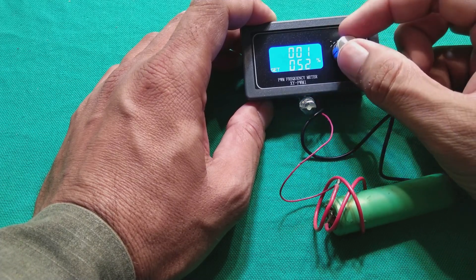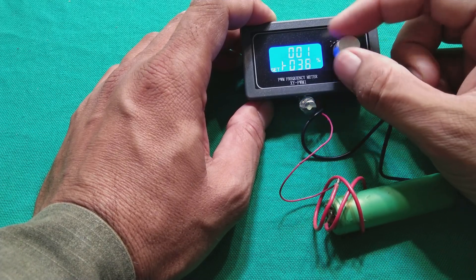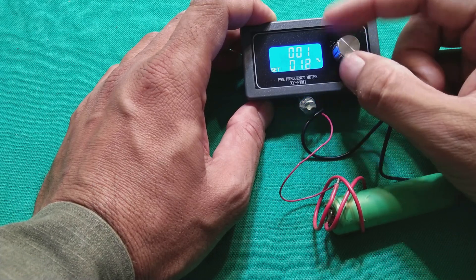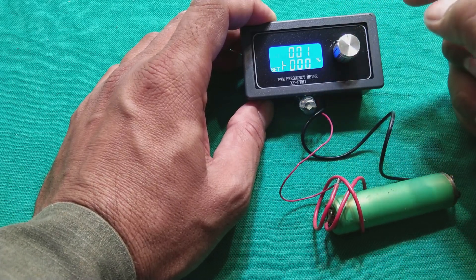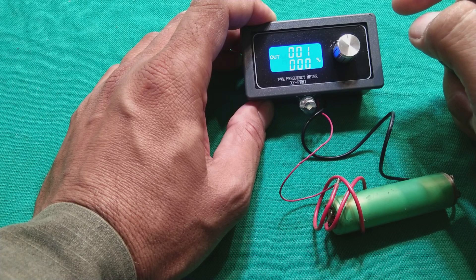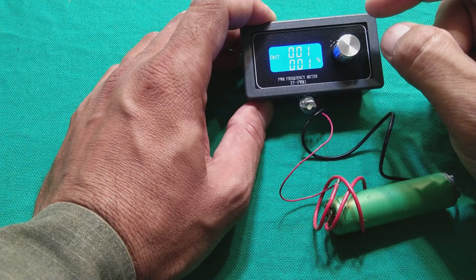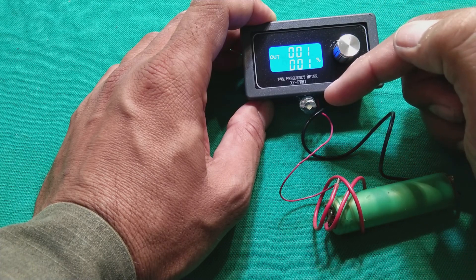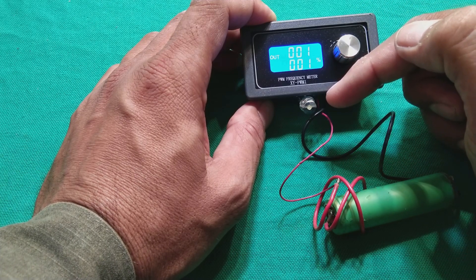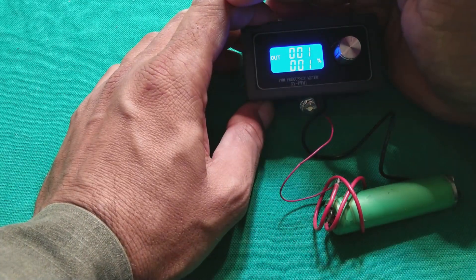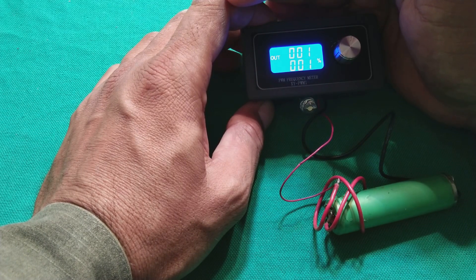The duty cycle we can change from 0 to 100%. So you can see now this is glowing very little. On 0 it's almost not glowing but on 1 it can glow very fast. For short period it is glowing actually. For short period it is glowing.